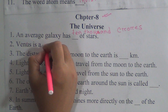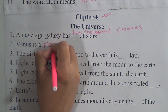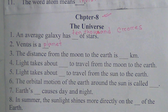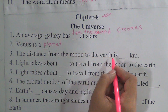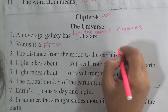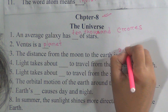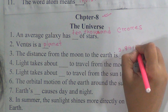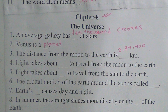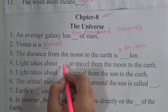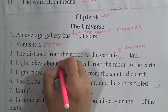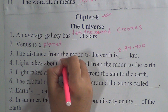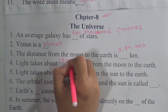Number two: Venus is a planet. Number three: the distance from the moon to the earth is 3,84,400 km. Number four: light takes about 1.3 seconds to travel from the moon to the earth.